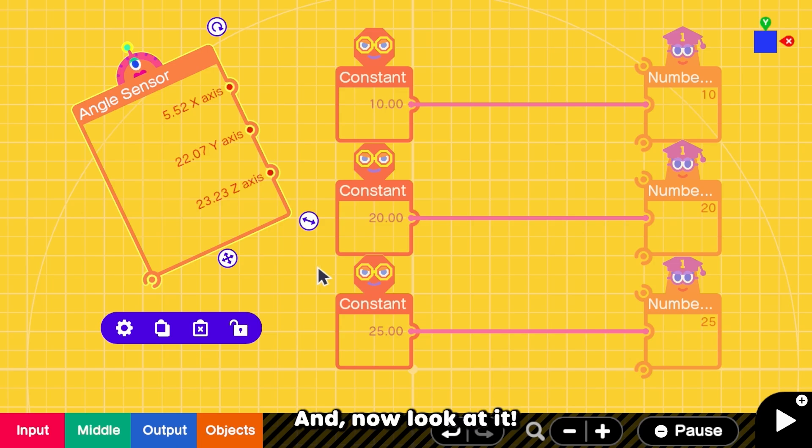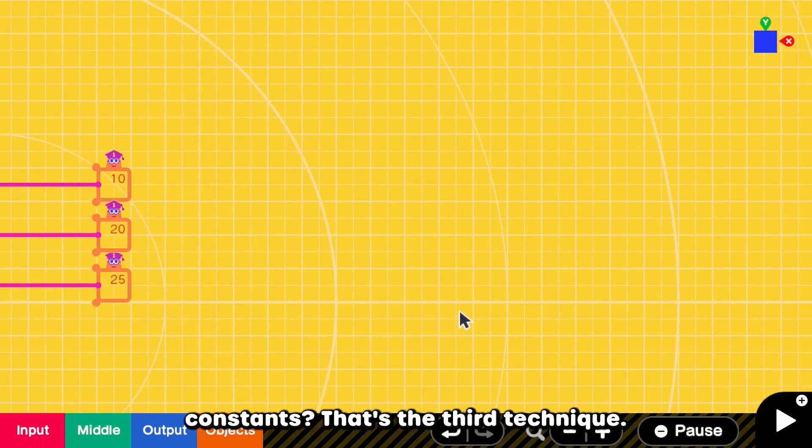And now look at it! All the values are wrong. So which nodon can be used to replace three constants? That's the third technique.